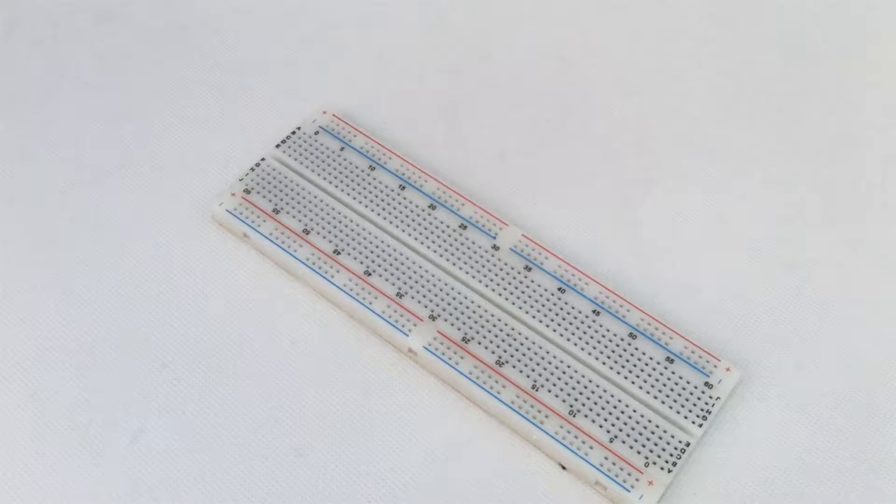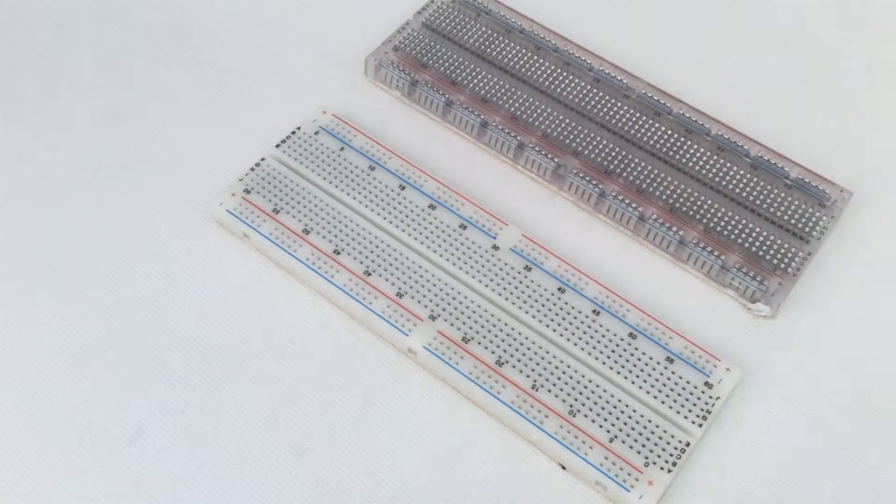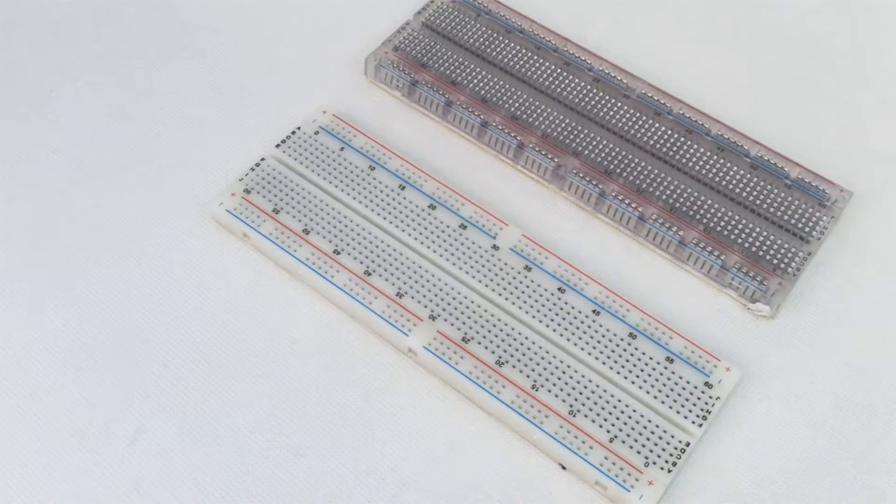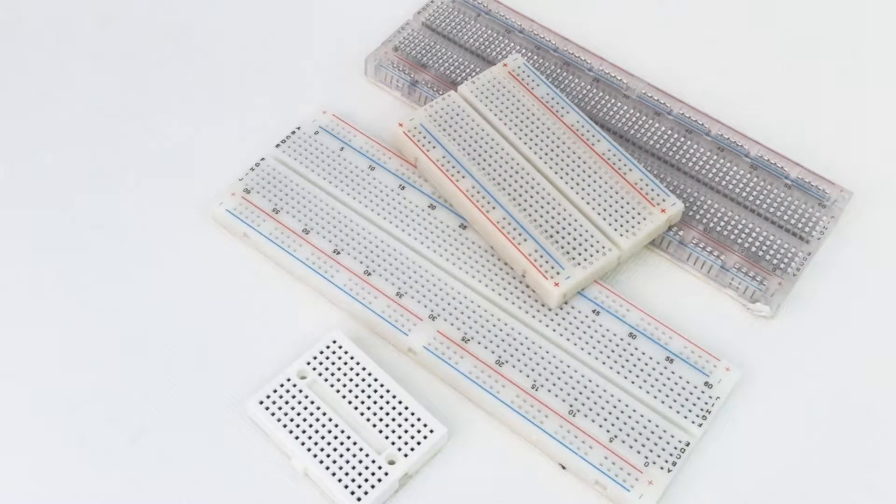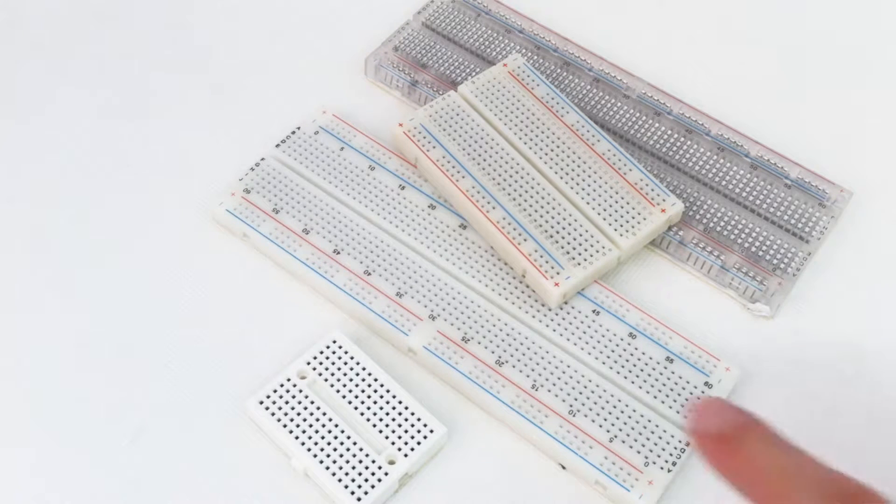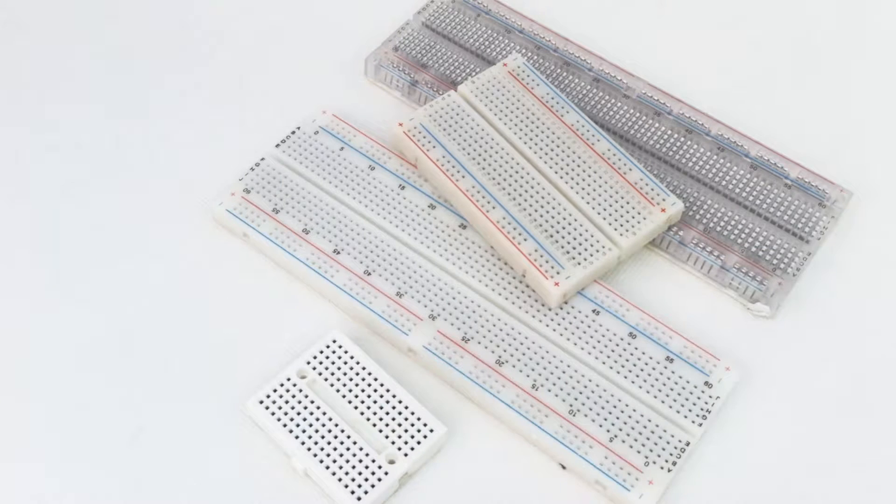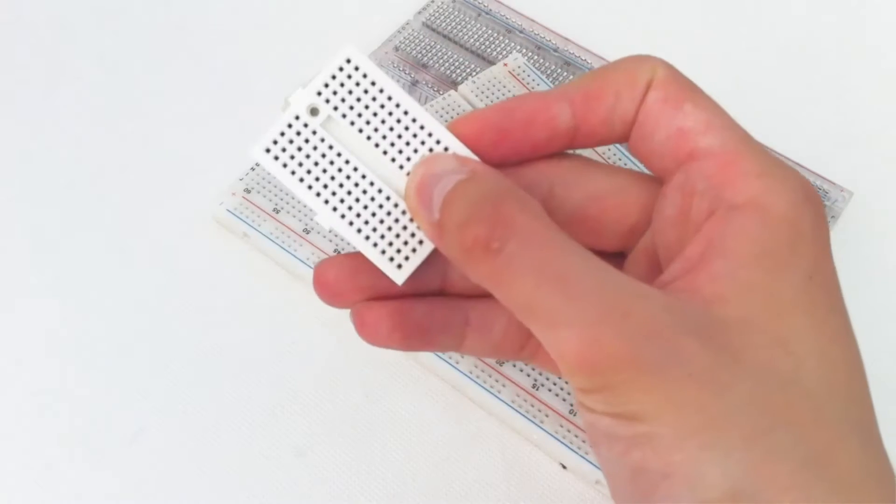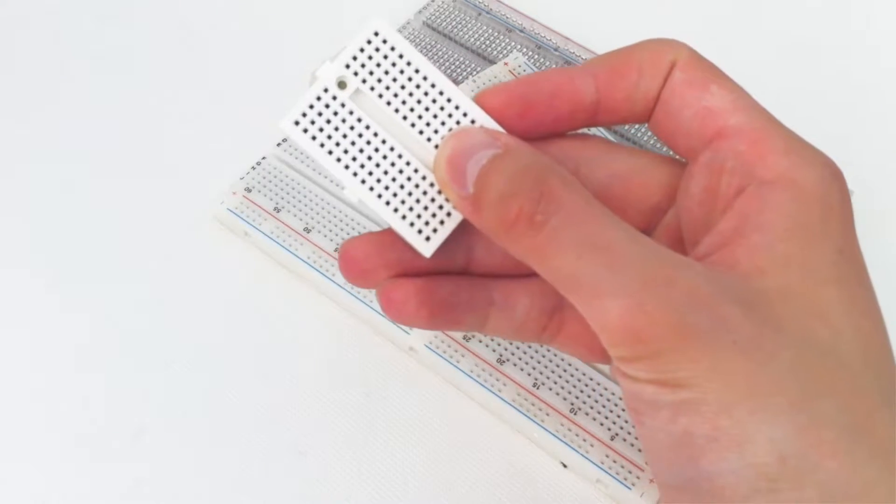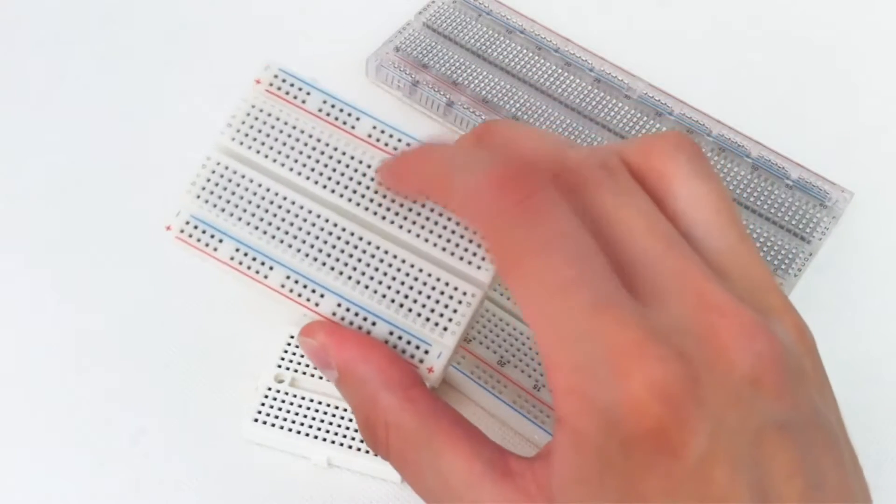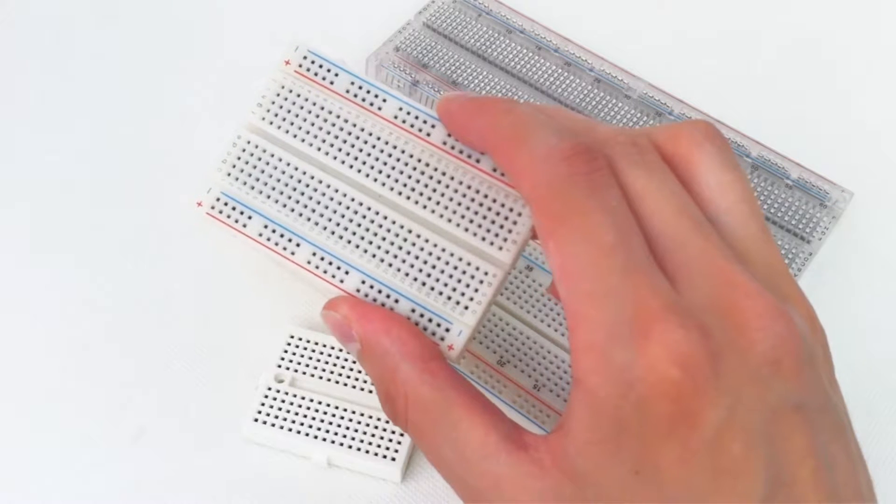Breadboards like these, also known as prototyping boards, are the basic building blocks of electronic circuits. They come, as you can see, in many different sizes but normally they're named after the number of points or holes that they contain. For our circuits we'll be using this which is the 400 point breadboard.